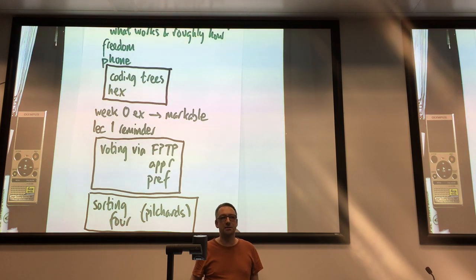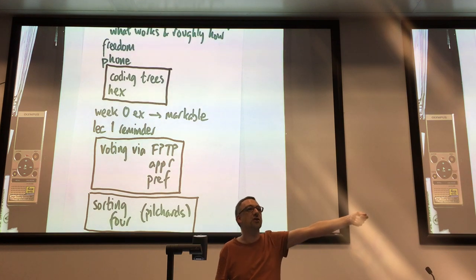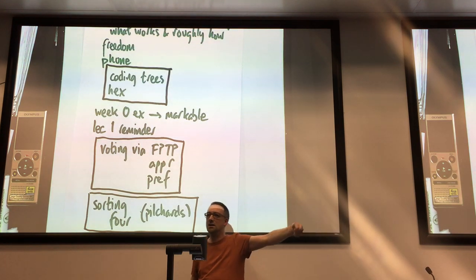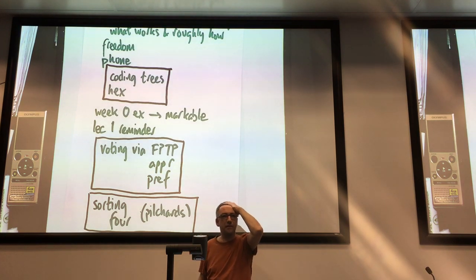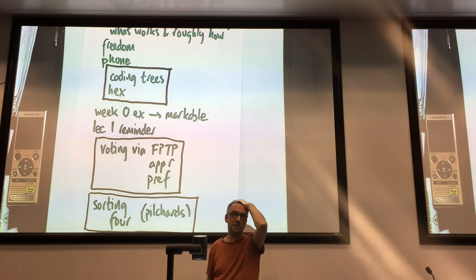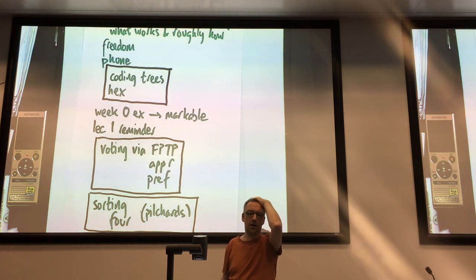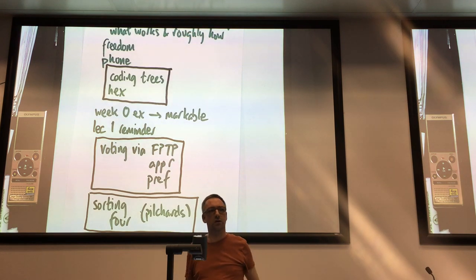So there are seven choices for who comes first, six choices for who comes second after that, and so on. So seven factorial is what? Well, let's figure it out. One factorial is one, times two is two, times three is six, times four is 24, times five is 120, times six...